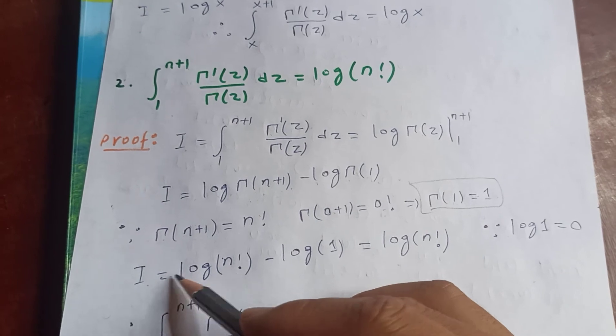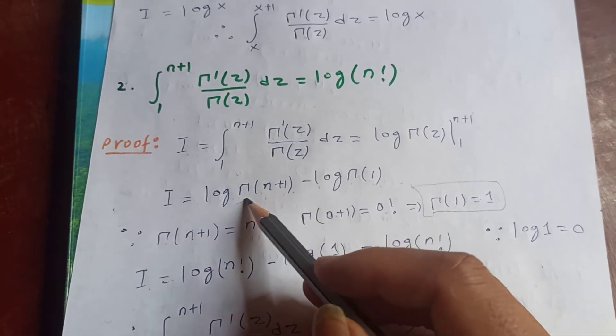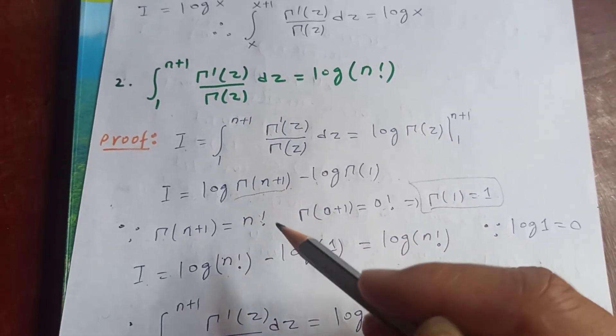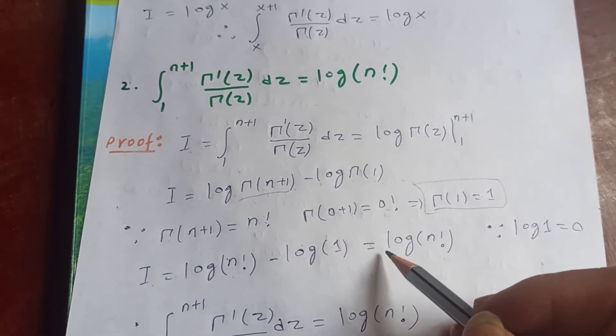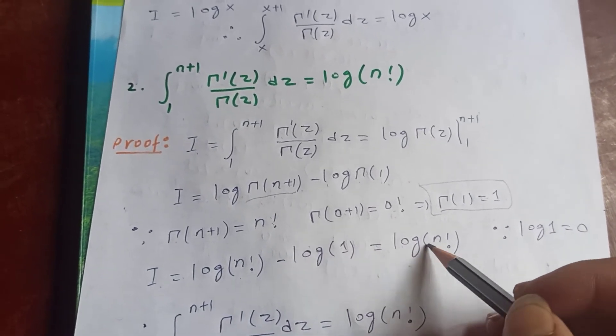Therefore I is equal to log of gamma n plus 1, which is n factorial, minus log 1. We know that log 1 is 0. Therefore I is equal to log of n factorial.